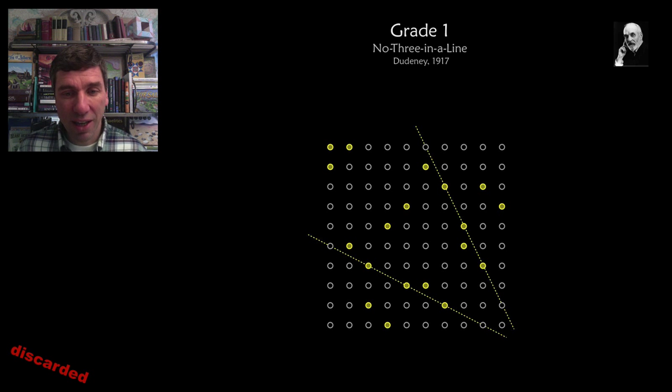No. Here I have two lines, and here's a third line, all of which have 3 or more skyscrapers lying on them. So this is a failure, and I also don't have 20 skyscrapers on there.